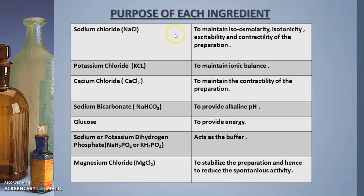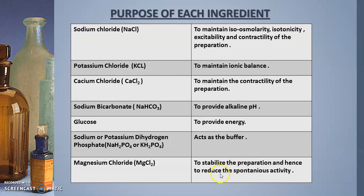The role of each ingredient: sodium chloride maintains isosmolarity, isotonicity, excitability, and contractility of the tissue preparation. Potassium chloride maintains ionic balance. Calcium chloride maintains contractility of the preparation. Sodium bicarbonate provides alkaline pH. Glucose provides energy to the tissue. Sodium or potassium dihydrogen phosphate acts as a buffer. Magnesium chloride stabilizes the preparation and reduces spontaneous activity.